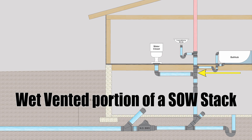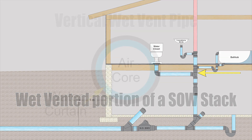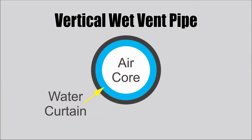When our wet vent is going down a vertical pipe there's a slightly different dynamic happening. The water itself swirls down and clings to the inside wall of the pipe, leaving an air core right in the middle. So the pipe will only be about half full, but the center of that pipe will be the venting portion.